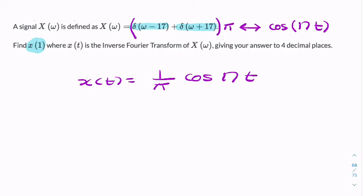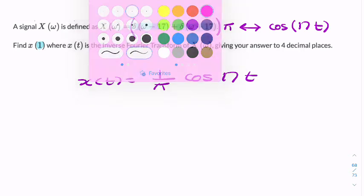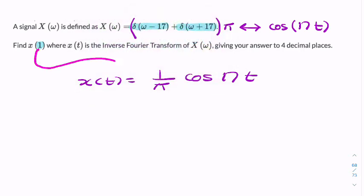The question gives us the value of t - it's 1. So we'd simply substitute 1 into there. We'd say x of 1 equals 1 over pi cosine 17t times 1.